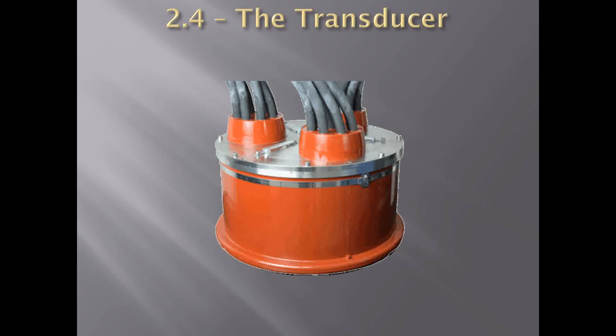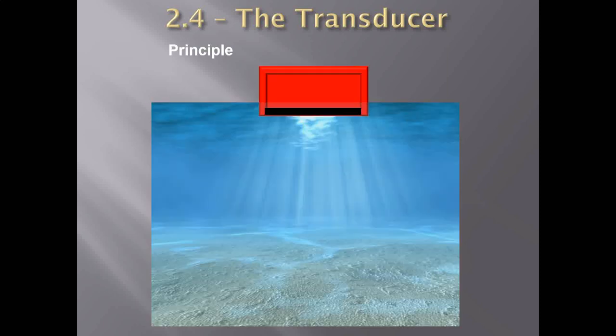The transducer is basically a converter of energy. It converts bursts of electrical energy received through the electronic equipment to pulses of mechanical energy, and then vice versa — when it receives the echo back, it converts the mechanical energy back into electrical energy. So the transducer converts electric energy to mechanical energy and vice versa, so that sound may be produced and the received signal can be converted back to electrical energy for the eventual display of depth.